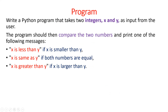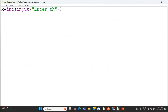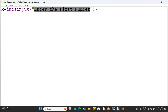We'll see an example. We are going to write a Python program to take two integers x and y as input from the user. The program should compare the two numbers and print one of the following messages: it will print 'x is less than y' if x is smaller than y, it will print 'x is same as y' if both numbers are equal, and it will print 'x is greater than y' if x is larger than y. For this, we are going to write a Python program. We enter the first number, so 'enter the first number' will get displayed in the console.